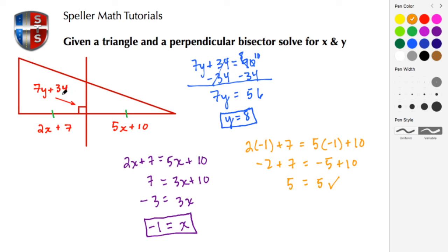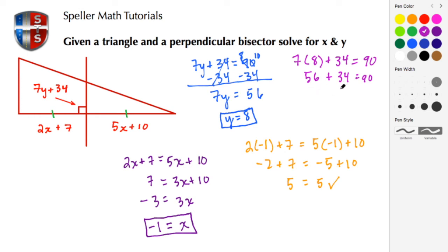Let's do one last check to verify our Y value. We substitute in: 7 times Y, where Y is 8, plus 34, which should equal 90 degrees. So 7 times 8 is 56, and 56 plus 34: 50 plus 30 is 80, plus 6 is 86, plus 4 is 90. So 90 equals 90 — our calculations are correct. If you found this clip helpful, please don't hesitate to subscribe, share, and/or like. As always, thank you.